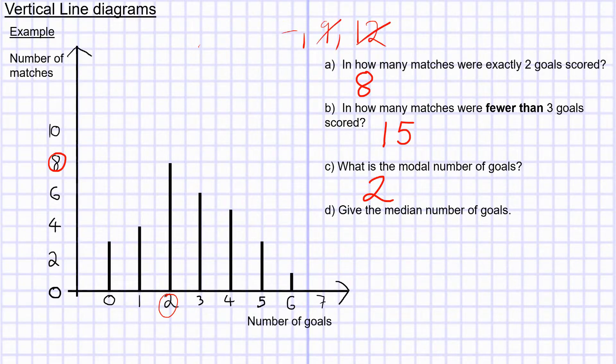If there were two middle values, you would go halfway between them. To work out the median from our line chart, we're going to imagine we do have everything in order — because the data is in order. Since I haven't got it written out in a list, I'm going to cross off parts of the line chart instead.